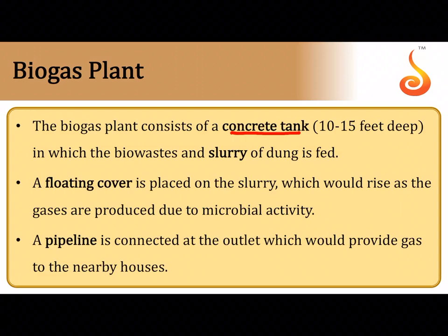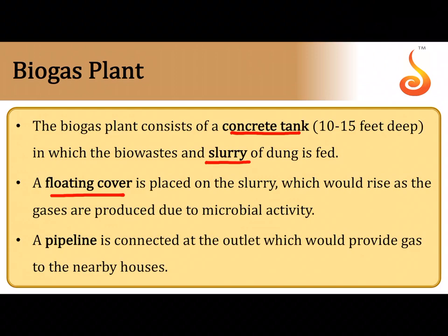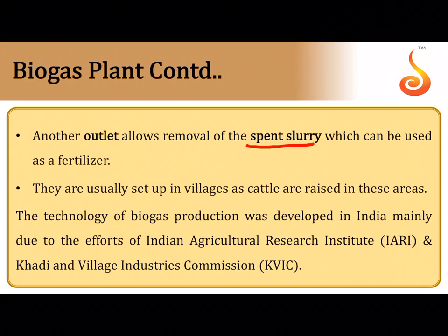In a biogas plant, there is a concrete tank deep in the ground into which a slurry of dung and other organic waste — kitchen refuse, dead plant remains — is fed. The tank is fitted with a floating cover that rises slightly when gas accumulates, indicating that anaerobic digestion is happening. The floating cover is connected to a pipeline delivering gas to the household. Spent slurry after anaerobic digestion can be used as fertilizer. Biogas plants are mainly developed in Indian villages by the Indian Agricultural Research Institute and Khadi and Village Industries Commission.